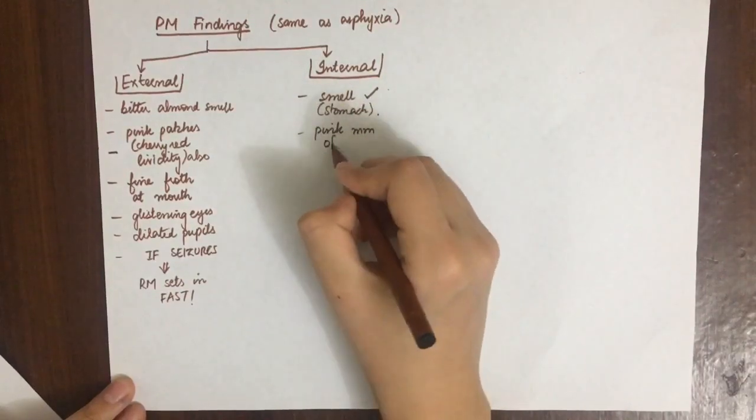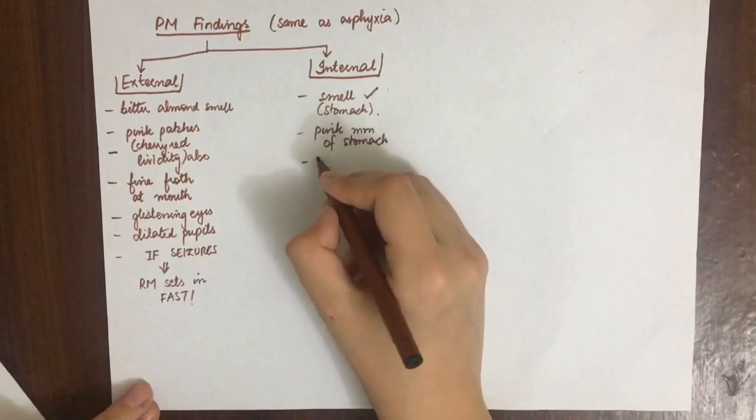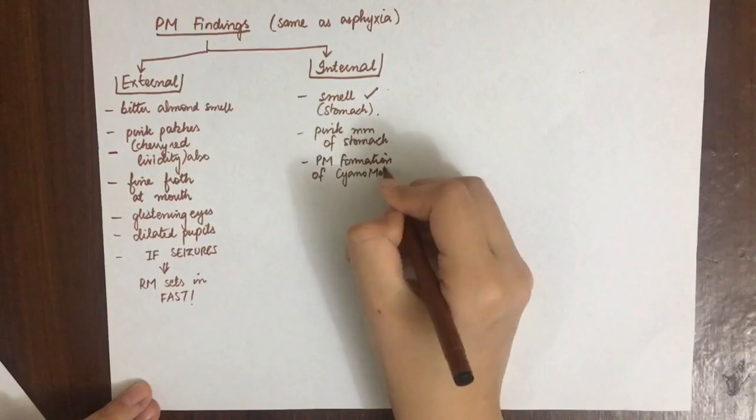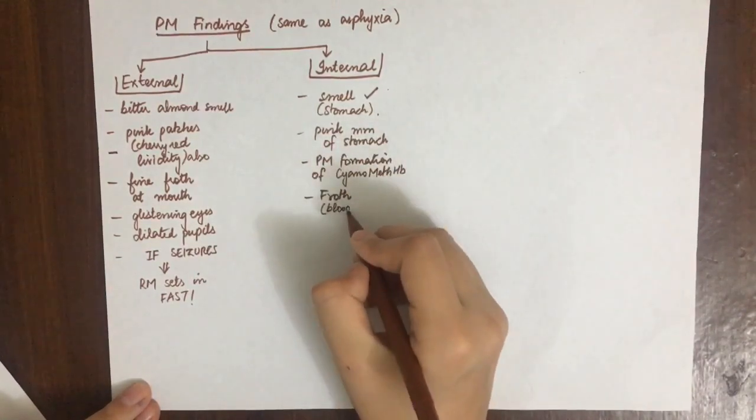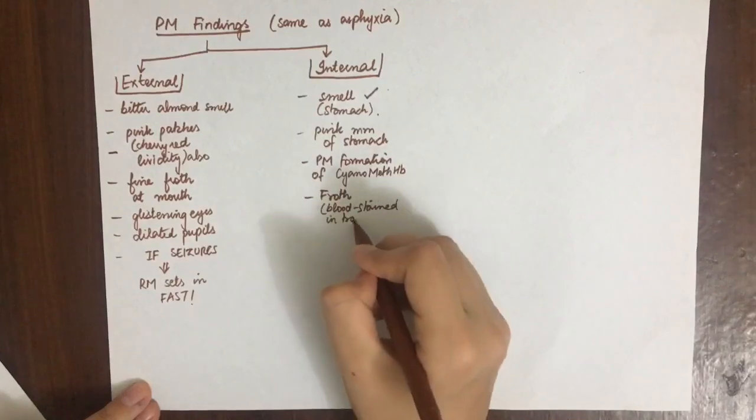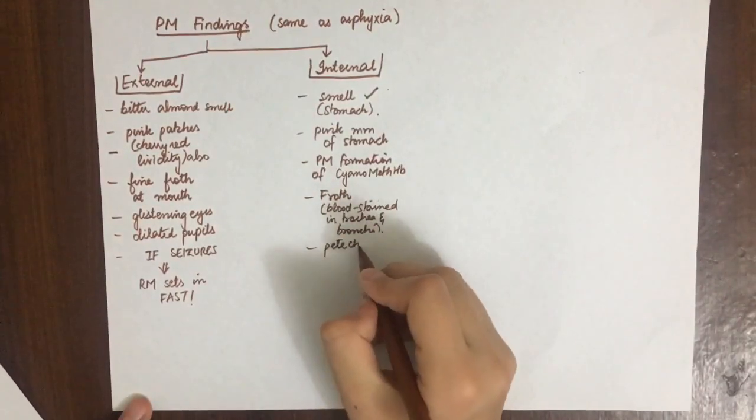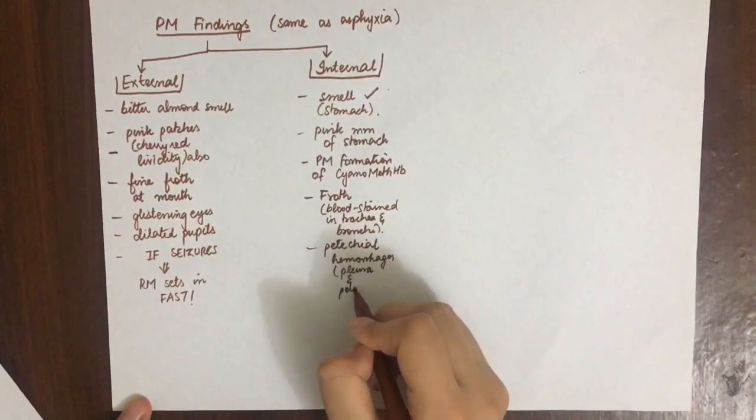Now let's see the internal findings. The smell can be recognized in the stomach, brain, etc. Pink mucous membrane of stomach and post-mortem formation of cyanomethemoglobin can be seen when hemoglobin is oxidized to methemoglobin. Froth is seen in trachea and bronchi. Petechial hemorrhages of pleura and pericardium can be seen.